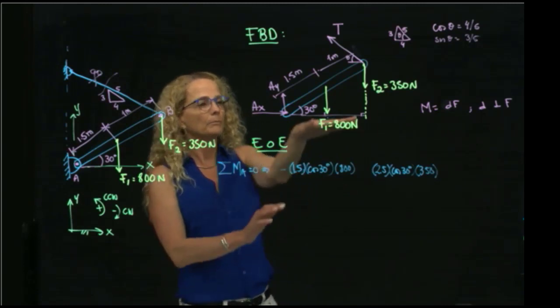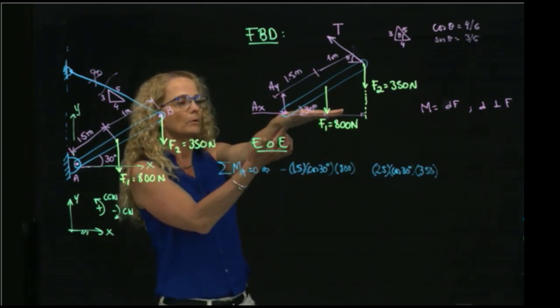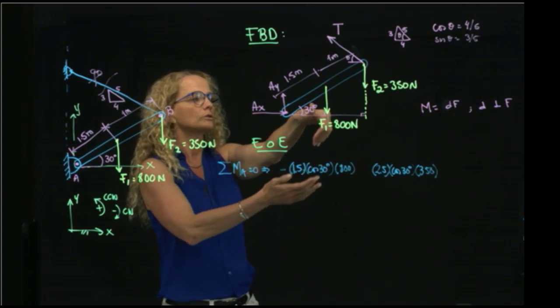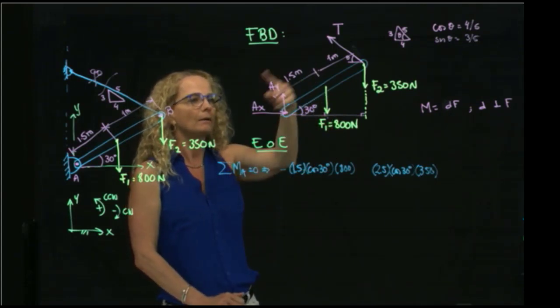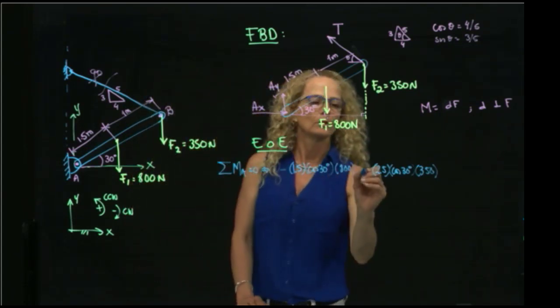And what is the sign? Again, I put my hand over here. This is the point where I'm taking moment. I cross my fingers towards the force, and it gives me a clockwise, so it's a negative.